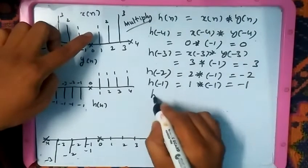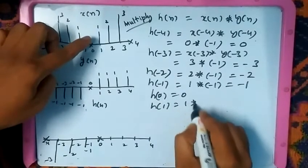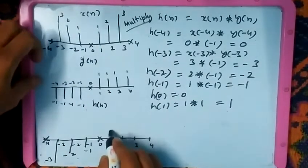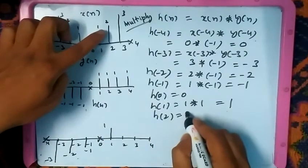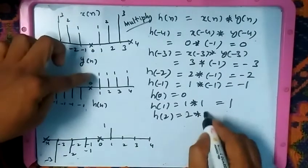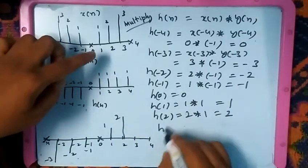1 times 1, which gives you 1 positive. Then at 2, we have amplitude 2 for x of n, and y of n we have 1, so it will be positive 2. At 3, we have the amplitude for x of n is 3...